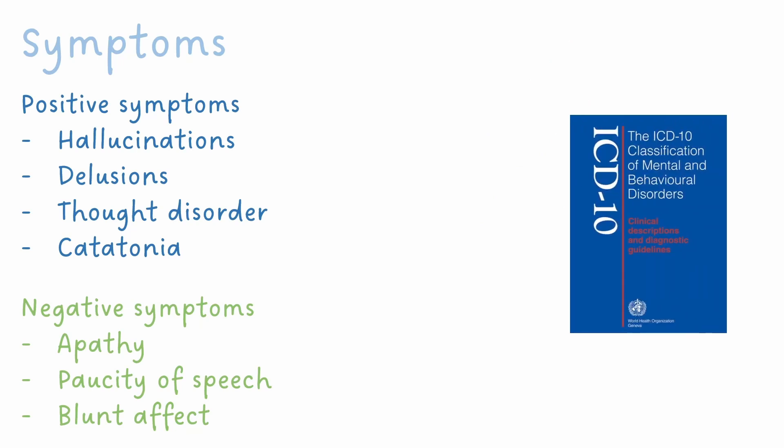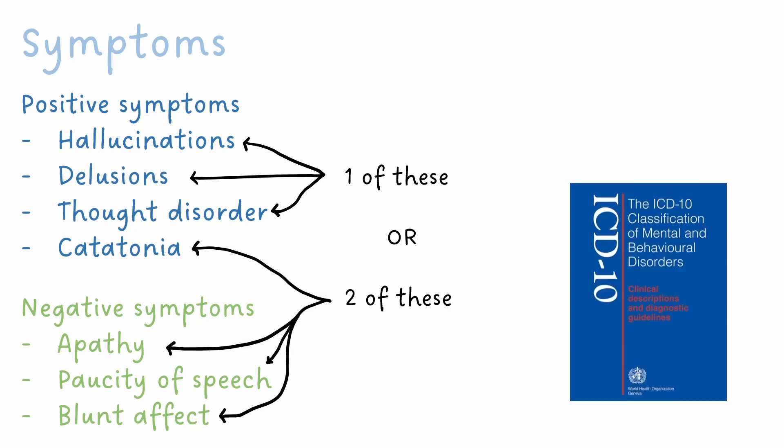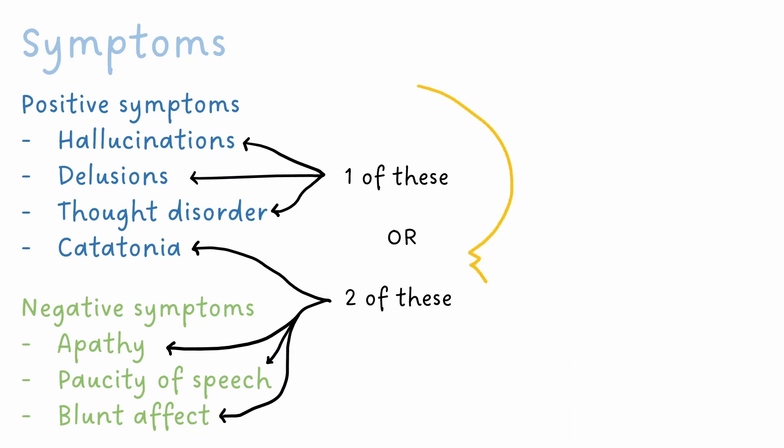The ICD-10 states that to make a diagnosis, one of the core symptoms must be present, which are hallucinations, delusions, or thought disorder, or that two of the non-core symptoms should be present. These symptoms must also be present for at least one month and not be due to other causes of psychosis such as drug intoxication or delirium.